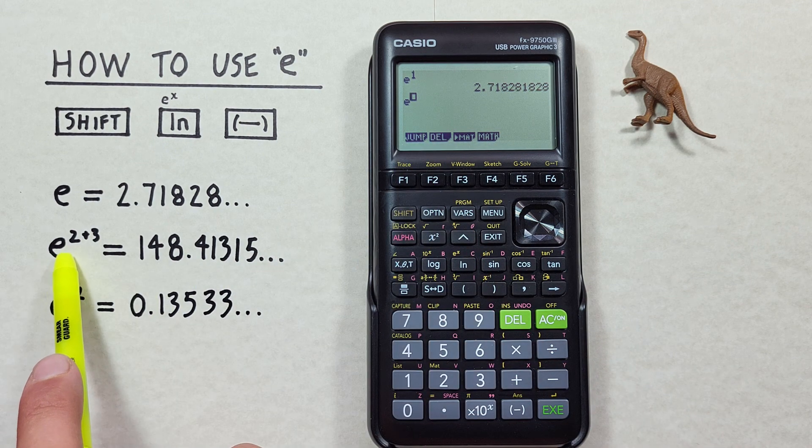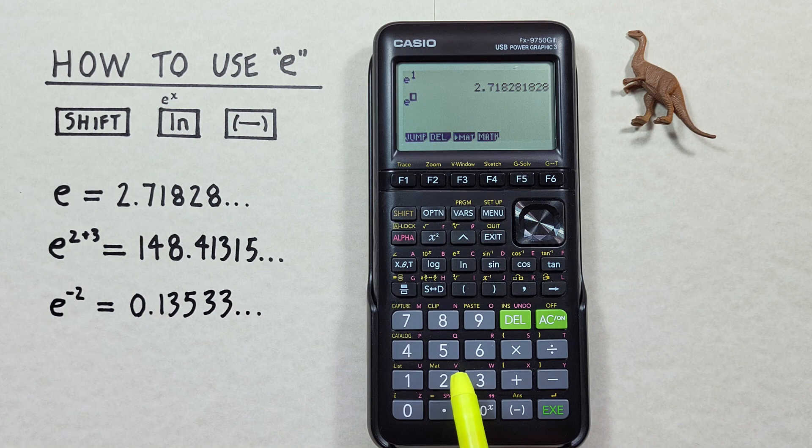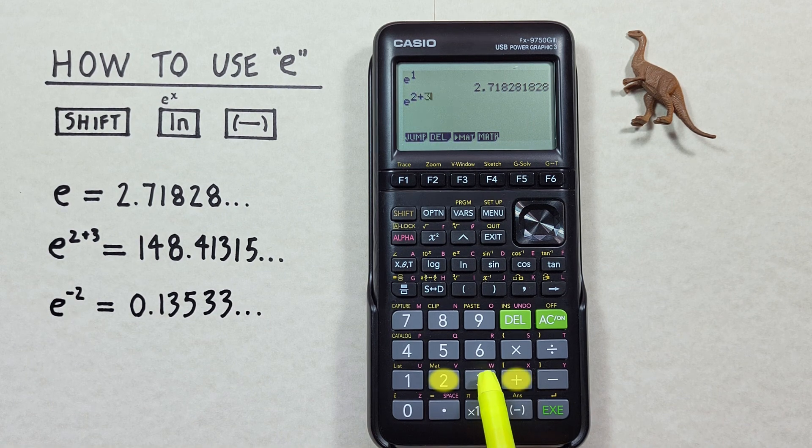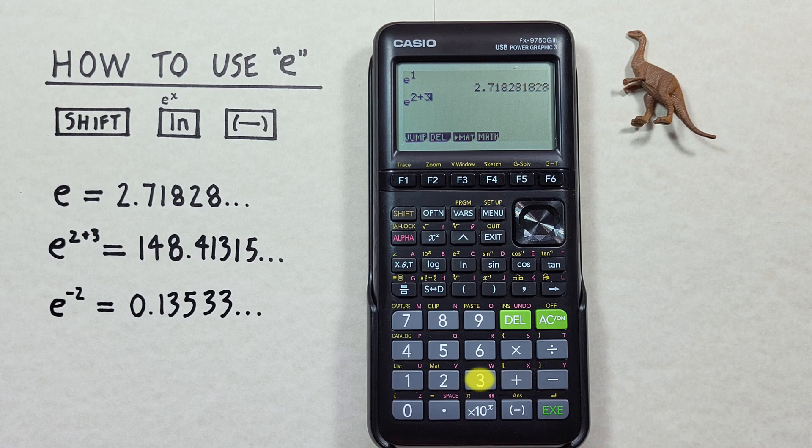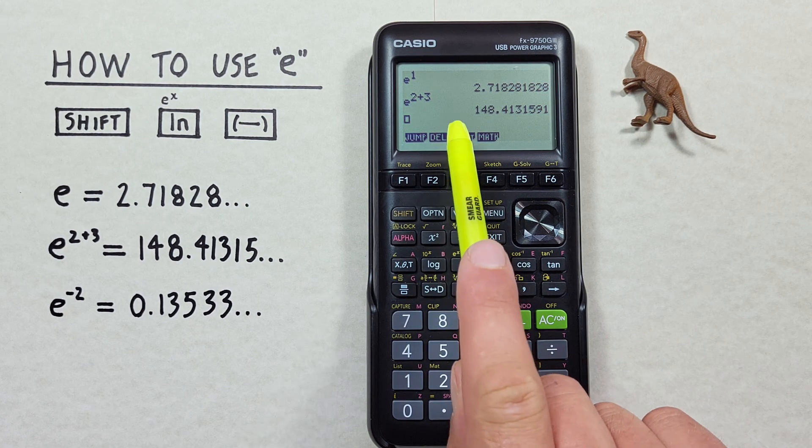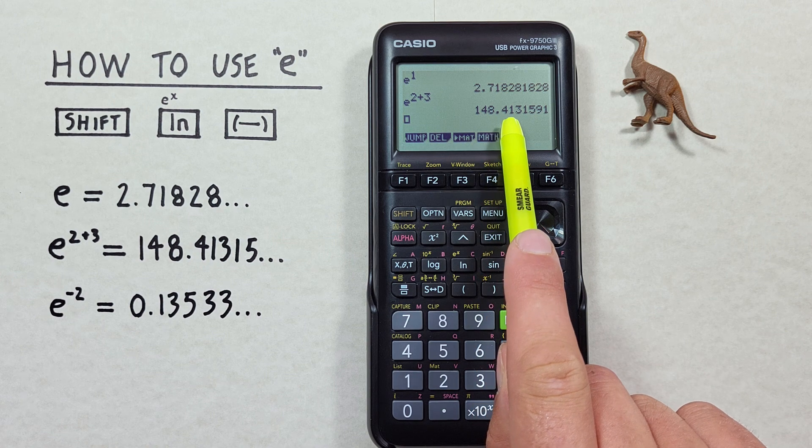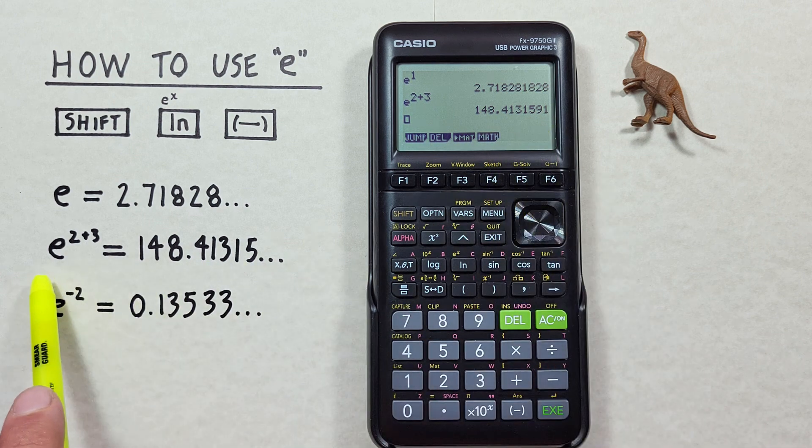Then we can enter our exponent, which was 2 plus 3, and hit EXE, and we see we get a result of 148.413159 and so on, which is correct.